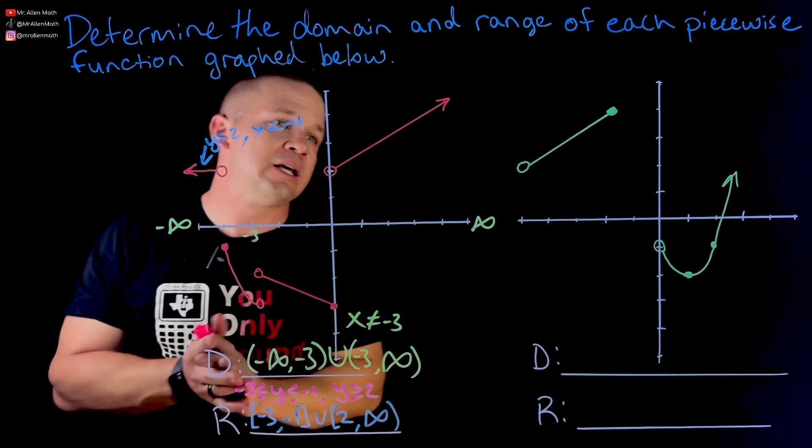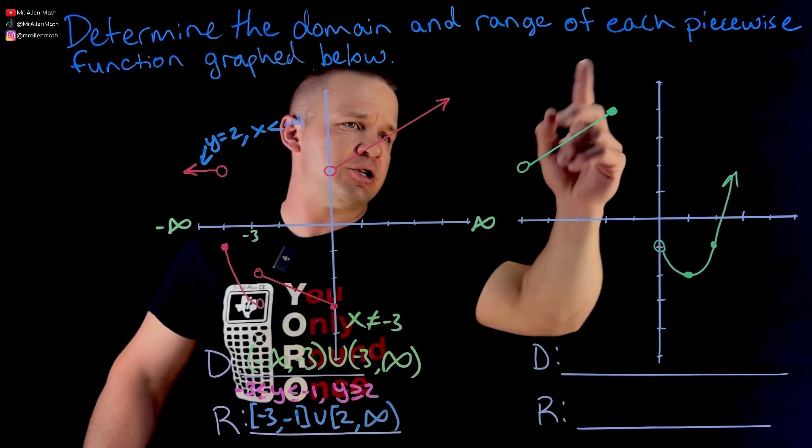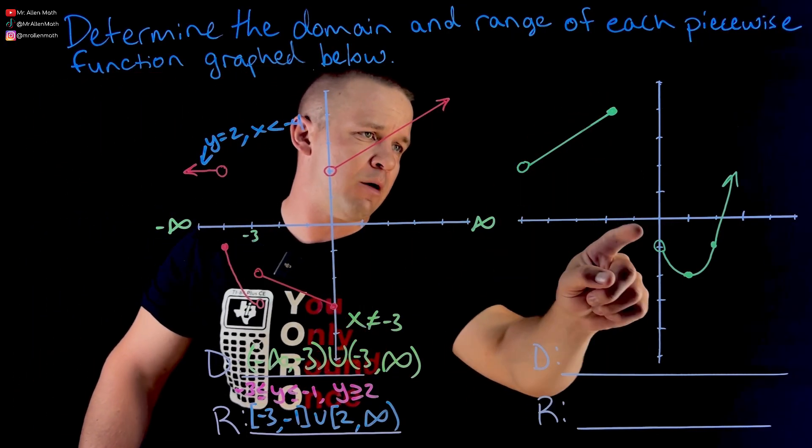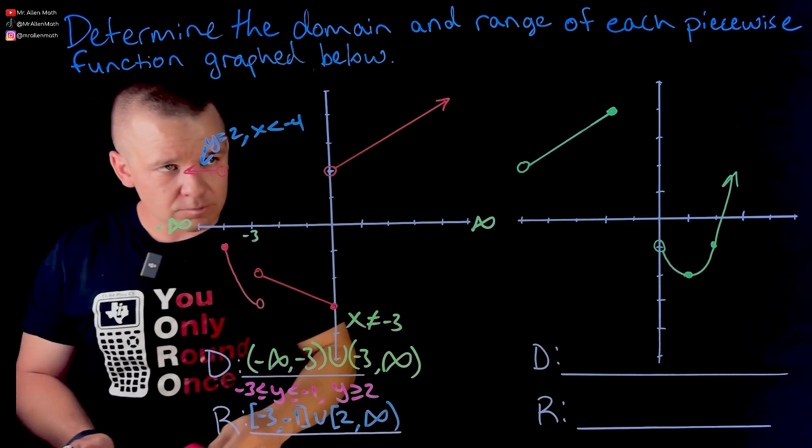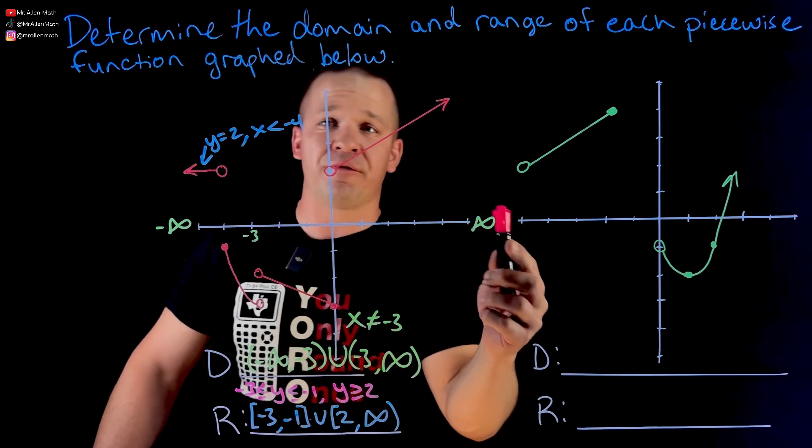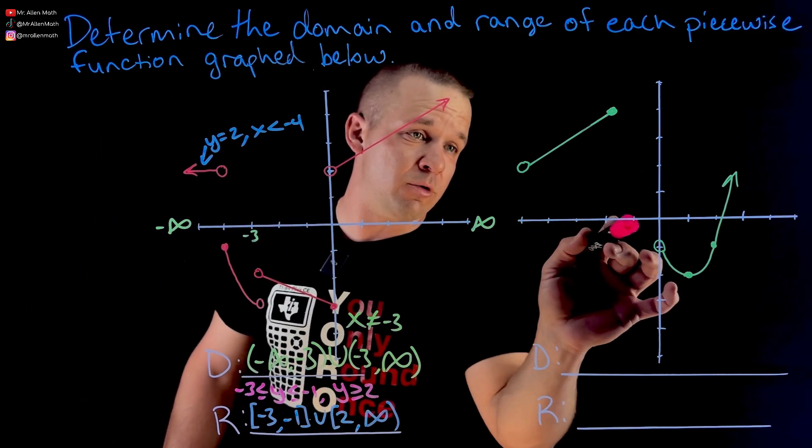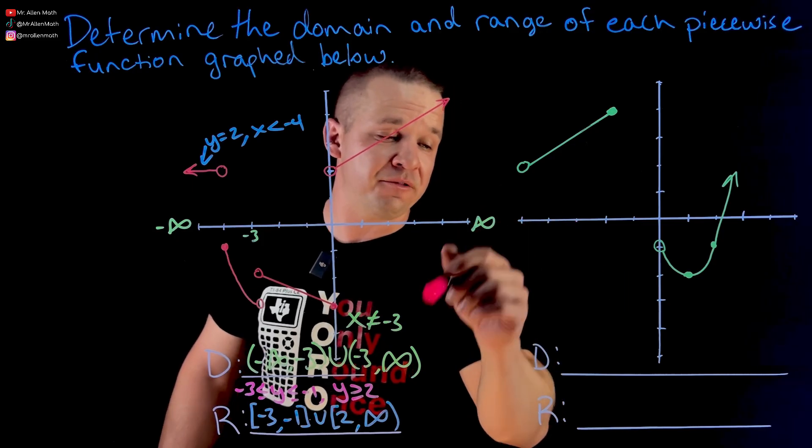All right, moving on. This one here, we got, it looks like a stretch of a linear equation and then it looks like a quadratic over here. So domain and range, left to right. Does this graph go all the way left or does it keep going? Well, it does stop. It looks like negative five.